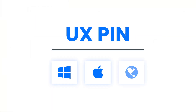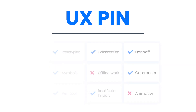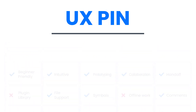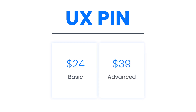UXPIN is available for Windows, Mac, and web browsers. Some of the amazing features it offers are great file support, great prototyping and sharing options, and it transforms your design into code. But you can't open multiple artboards at once and it doesn't support third-party plugins. The price is $24 per month for the basic and $39 per month for the advanced.